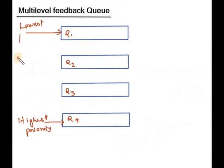So priority increases from here to here. A method is applied that Q1 has time quantum TQ equal to 2. Q2 process has time quantum 4. Here TQ is equal to 8. And highest priority Q4 uses first come first serve order.